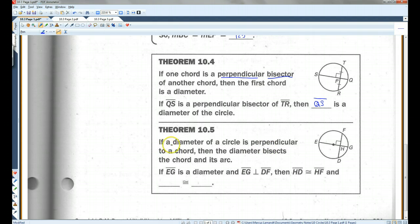Theorem 10.5. If a diameter of a circle is perpendicular to a chord, then the diameter bisects the chord and its arc. So, if you know this is a diameter, and there's some other chord that intersects the diameter in such a way that it's perpendicular, then it bisects that chord. So, if EG is diameter, and EG is perpendicular to DF, then HD is congruent to HF, and arc GD is congruent to arc GF.